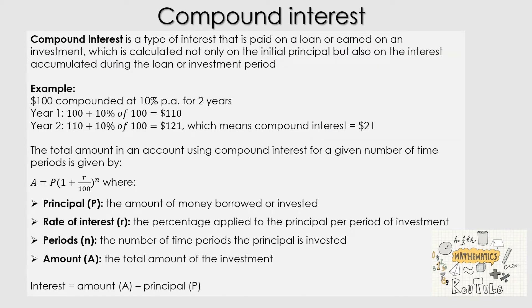Now moving to compound interest. Compound interest is a type of interest paid on a loan or earned on an investment, calculated not only on the initial principal but also on the interest accumulated during the loan or investment period — that's the key difference from simple interest. For example, $100 compounded at 10% per annum: in year one, 10% of $100 gives $110. In year two, 10% is applied to $110, giving $11 interest, so the total becomes $121. The compound interest over two years is $21 — $10 in year one and $11 in year two.